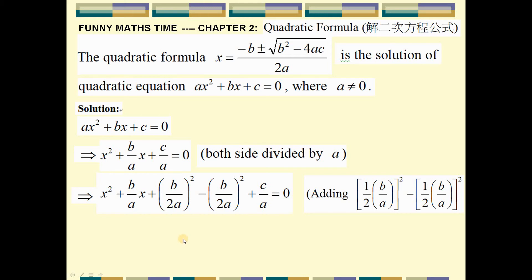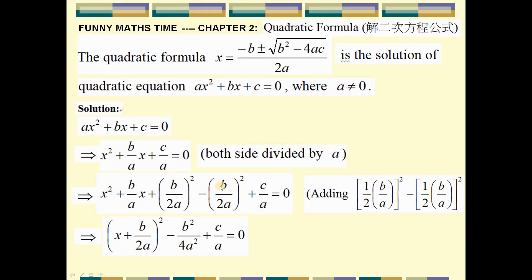So we can make a completing square. These three terms are equal to x plus b over 2a, all squared. And the additional term is b squared over 4a squared, minus c over a, equals zero.